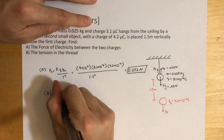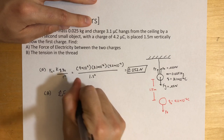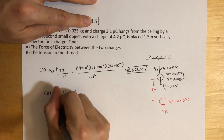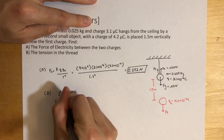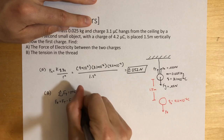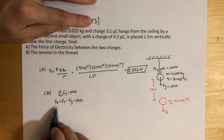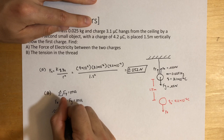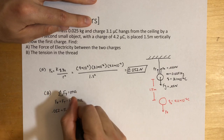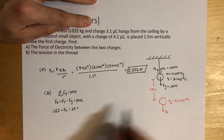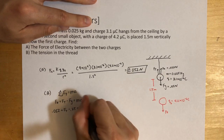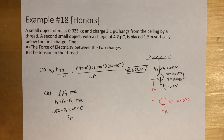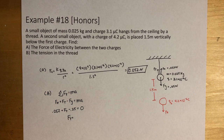For part b, find the tension in the thread. The sum of all forces in the y equals zero (no acceleration). Force of electricity is 0.052 upward, force of tension is upward, and force of gravity is 0.25 downward. Solving: tension equals 0.25 minus 0.052, which gives us 0.198 newtons.